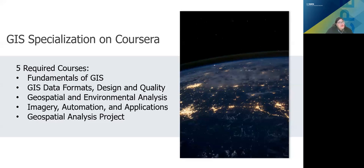We have an option for international students. Our GIS specialization on Coursera consists of an asynchronous series of courses on Coursera, which is an online learning platform. We recommend this option if you or someone you know are internationally based. There are five required courses, which include a geospatial analysis project which serves as a capstone to build on concepts learned in the series of courses, and each course is about four weeks long. We are restructuring our GIS specialization to bring in new and exciting features, and we're switching it to GIS Pro as well. So there'll be a lot of fun stuff coming up in the future — stay tuned.